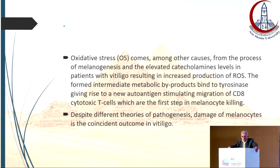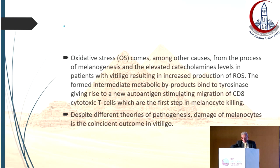As known, melanosomal autoantigen represents the most significant initiator of autoimmune disease. Oxidative stress binds to tyrosinase, giving rise to a new autoantigen stimulating migration of CD8 cytotoxic cells, which are the first step in melanocyte killing. Despite different theories of pathogenesis, damage of melanocytes is a common outcome in vitiligo.